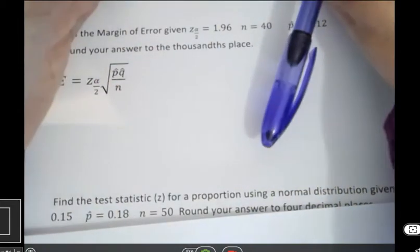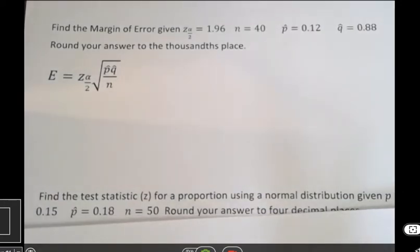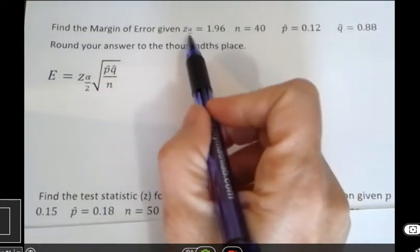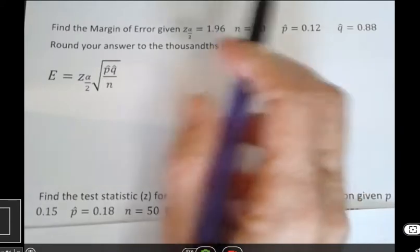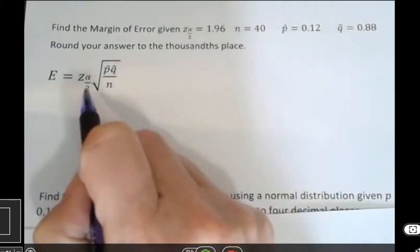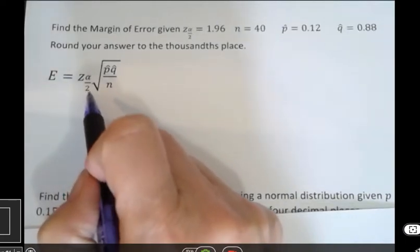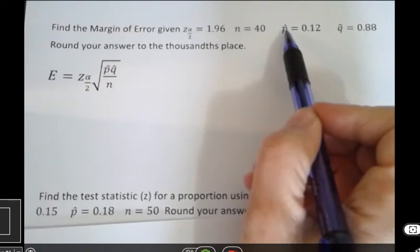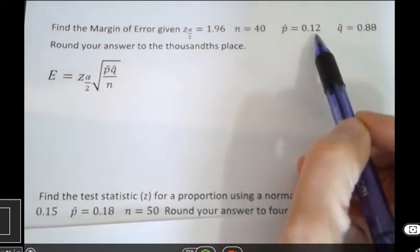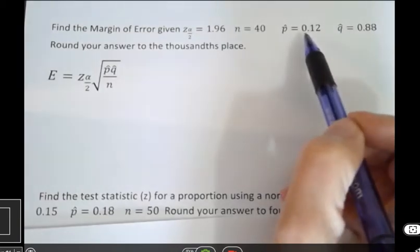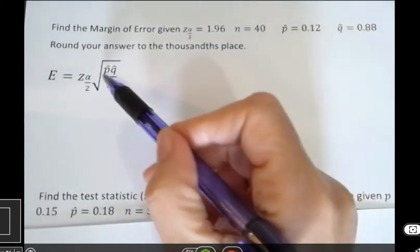The next one is a formula for margin of error, which you'll see in your statistics class. We have Z with a subscript of alpha over 2, and that's the value of 1.96. That's your critical value. When you're taking stats, you'll see that. For now, we just want to plug into the formulas. And then we have N, we're given P hat and Q hat. Notice that they add up to one. That's how that works with P hat and Q hat or P and Q. And so we have everything we need here.